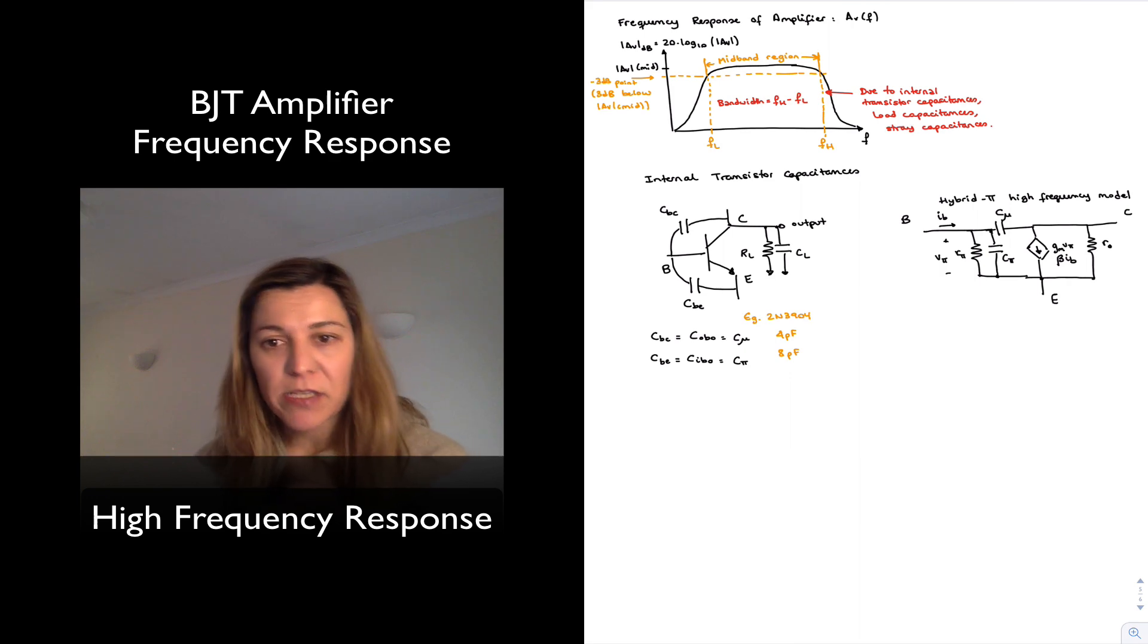There are these capacitances between base and collector, between base and emitter. Oftentimes, we'll find a situation where we will see the capacitance, one of these internal capacitances connected across a feedback loop, meaning from the input to the output of our circuit.